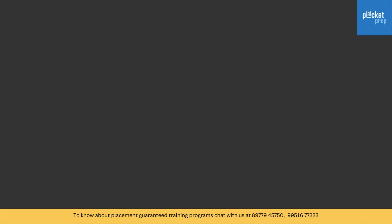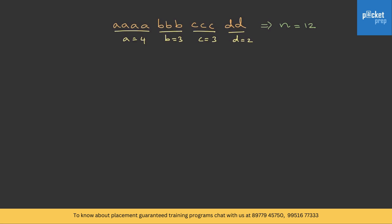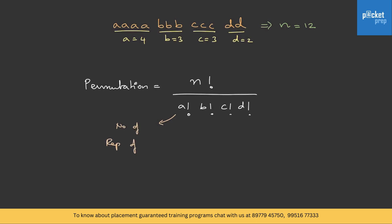Now let us get into Type 2 questions — problems based on permutation of similar objects. Suppose we have a set of objects where some are repeating, like A A A A B B B B C C C D D. The total number of objects n is 12; A repeats 4 times, B repeats 3 times, C repeats 3 times, and D repeats 2 times. Whenever few objects in a set are repeating, the permutation is n! divided by the factorial of the count of each repeating object.